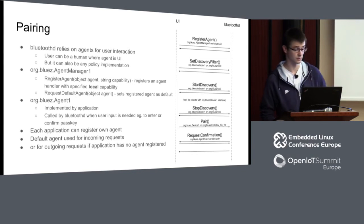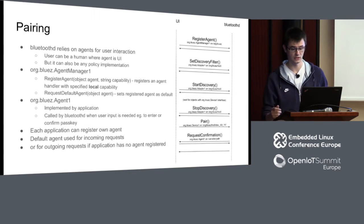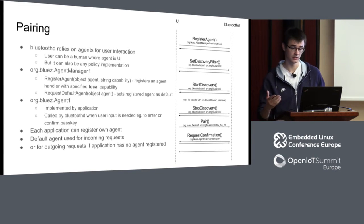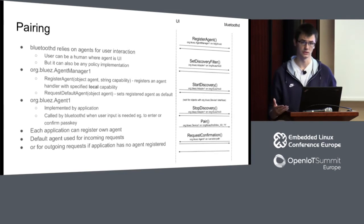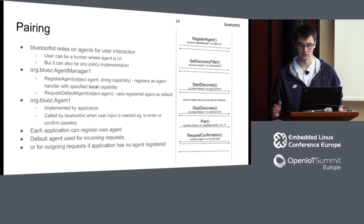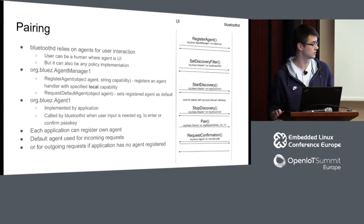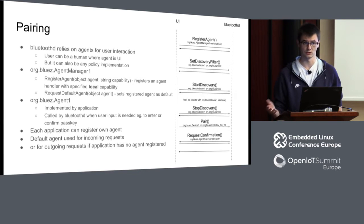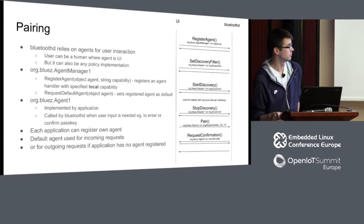The pairing call chain: you register your agent, set your discovery filter with UUIDs for example, and start discovery. When the device shows up, you stop discovery — this is important since you'll have better antenna time for pairing and connecting. On the device object on the Device1 interface, you call Pair. BluetoothD starts pairing. If user interaction is needed — for example to confirm a passkey — it will issue a call to the registered agent. When pairing is completed, the Pair command returns.